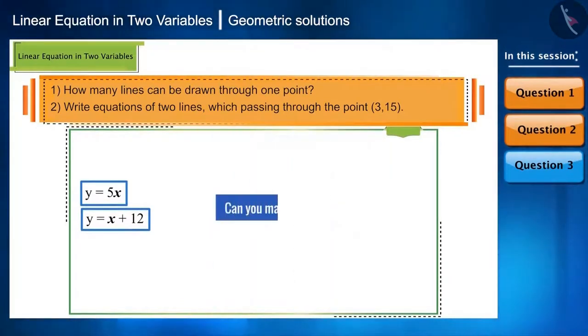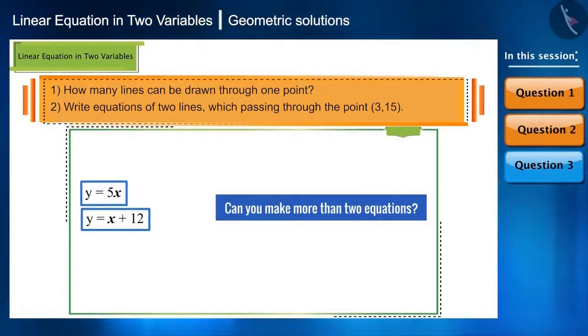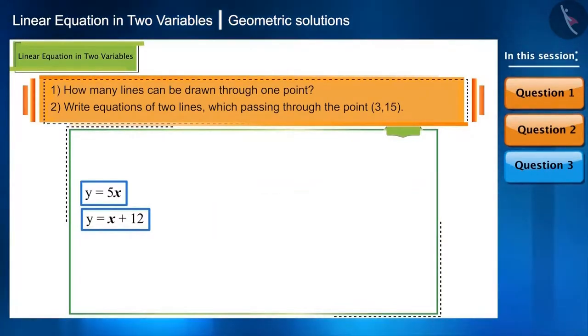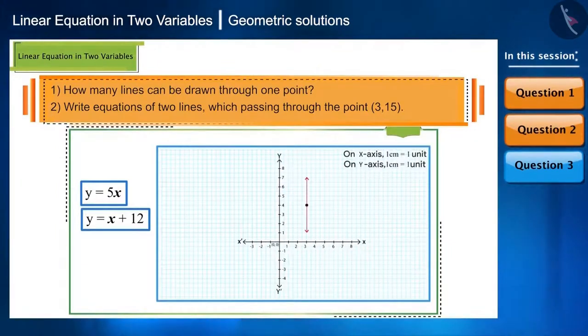Friends, can you make more than two equations? Can we establish any other relation between them? As we just saw, infinite number of lines can be drawn from a single point. Similarly, there can also be infinite relations between them.